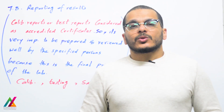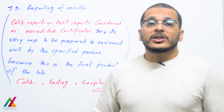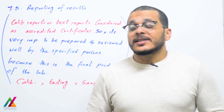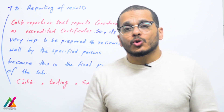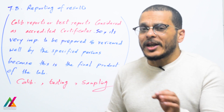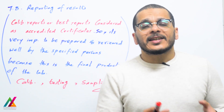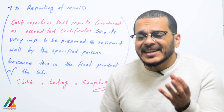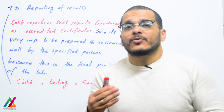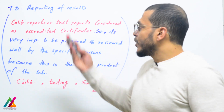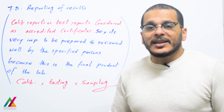Welcome back to a new lecture on ISO/IEC 17025:2017 edition, clause 7.8: reporting of results. Reporting of results is very important for any lab because it is the final product of the lab to the customer. It should be prepared and reviewed well by the specified persons. Calibration reports from calibration laboratories, test reports, and sampling reports are considered accredited certificates and must be prepared and reviewed well before giving to the customer.